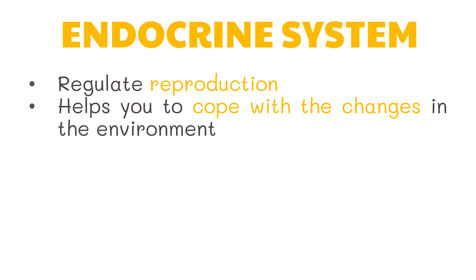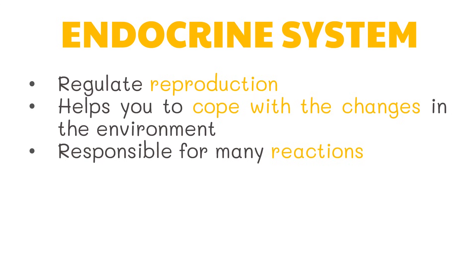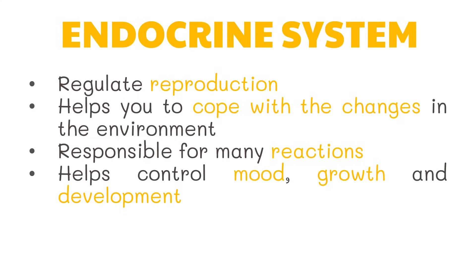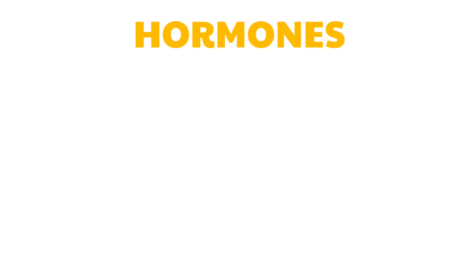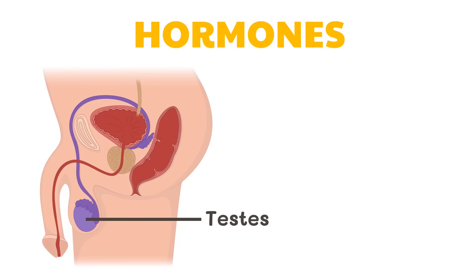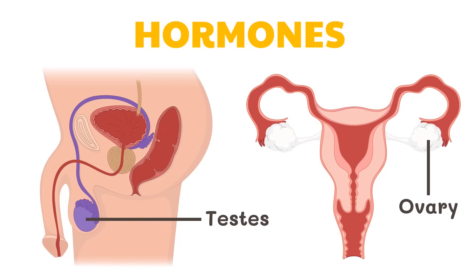In addition, the endocrine system is responsible for many reactions such as influencing how your heart beats, how your bones and tissues develop, and even your capacity to have a baby. It also helps control mood, growth, and development and plays an essential role in the occurrence of disorders such as diabetes, thyroid diseases, growth disorders, and sexual dysfunctions. Both men and women produce hormones in the same areas with one exception — the reproductive glands. Extra male hormones are produced in the testes, while female hormones are produced in the ovaries. Some hormones have short-term effects, while other hormones have influence in the long term, such as those that control growth and the changes at the onset of puberty.